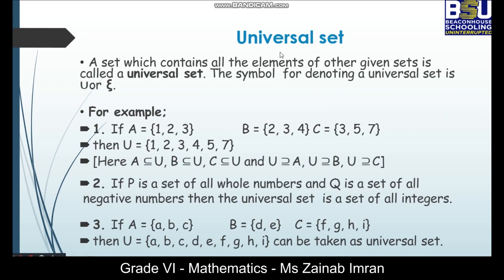So let's start with a universal set. What is a universal set? A set which contains all the elements of other given sets is called a universal set. The symbol for denoting a universal set is U or E.